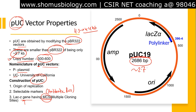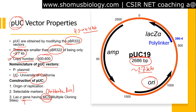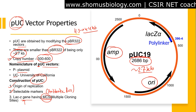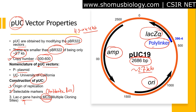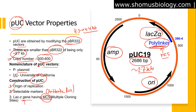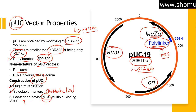In the pUC19 diagram, we have the origin of replication, the ampicillin resistance gene as the selectable marker, and the lacZ gene. The poly-linker is the region containing the multiple cloning site. Multiple cloning site, poly-linker, and restriction endonuclease sites are the same things in a vector. This poly-linker is placed under the lacZ alpha region.